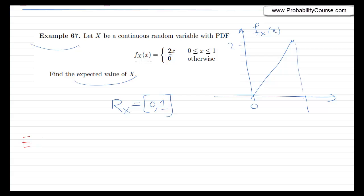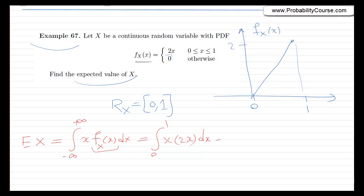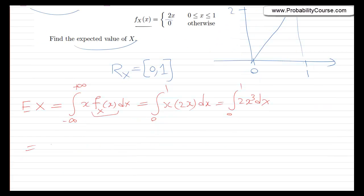So let's find the expected value of X. Our formula says that the expected value of X is given by the integral from minus infinity to plus infinity of x · f_X(x) dx. The pdf is non-zero only from 0 to 1, so the integral needs to be calculated from 0 to 1 only: the integral from 0 to 1 of x times the pdf, which is 2x, dx.